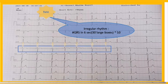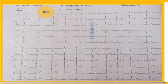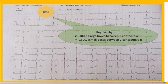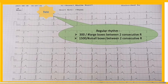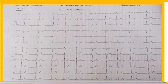Here there are seven QRS complexes in 30 large boxes, so the heart rate is 70 beats per minute. If the rhythm is regular, one way is to divide 300 by the number of large boxes between two R waves. Another method is to divide 1500 by the number of small boxes between two R waves, which is the most accurate method when the heart rate is regular and fast.